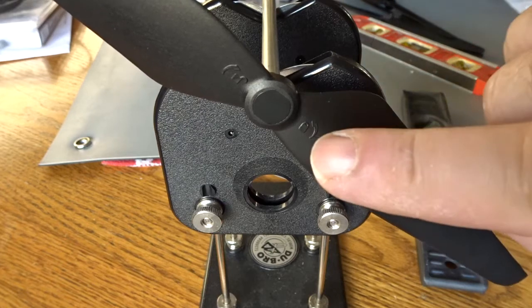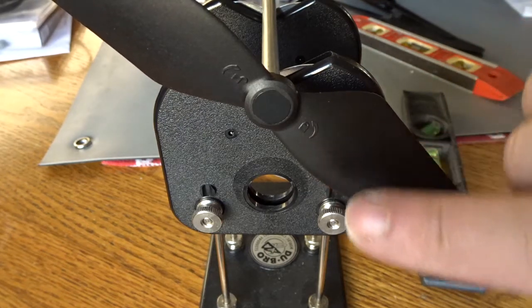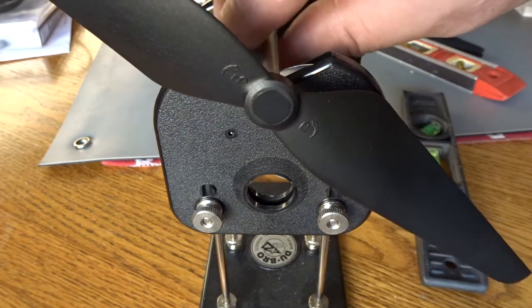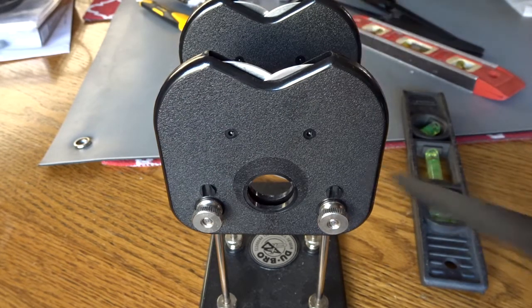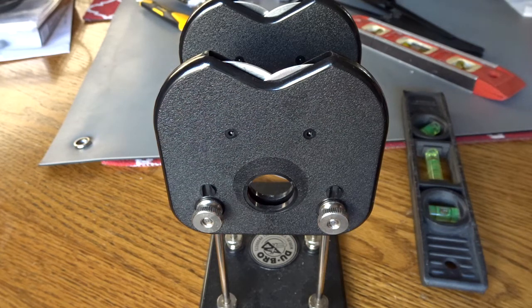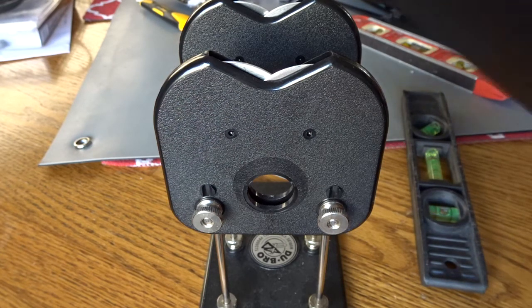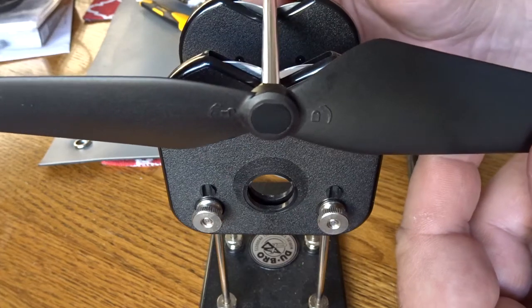So that one's repeatable, showing the lock logo leaning down a little bit. Okay, so now let's try another one. There is a different prop balancing shaft. None of these came with the Dubrow; these are third-party shafts.